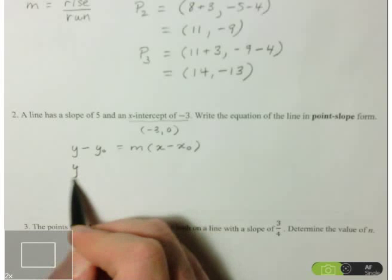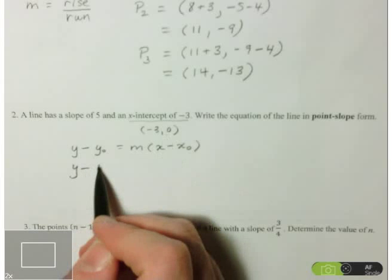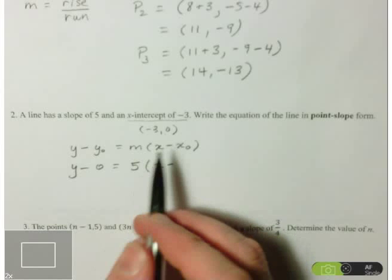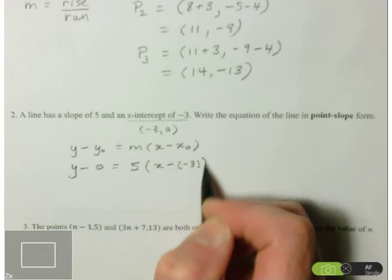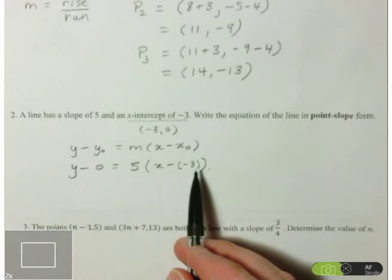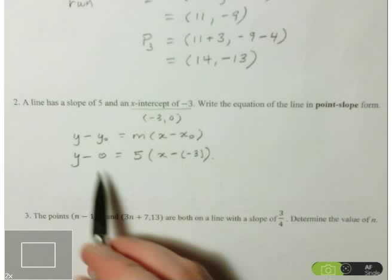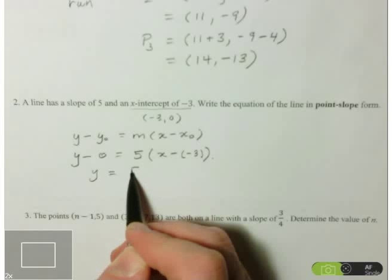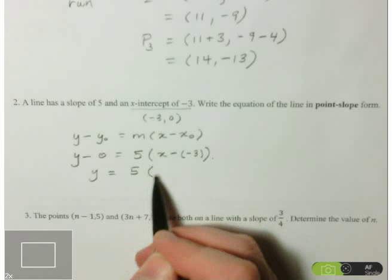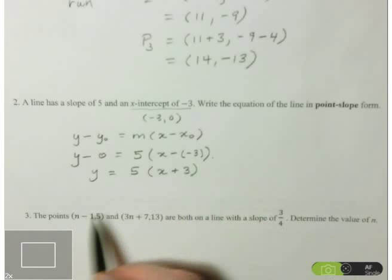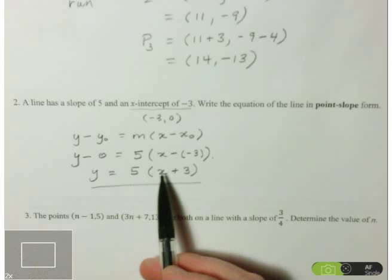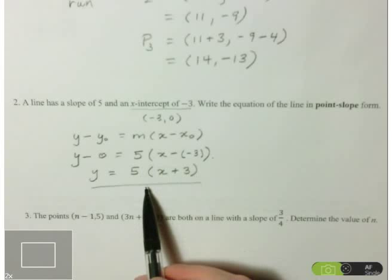Let's input our numbers: y minus 0 equals 5 times (x minus negative 3). We do some simplification — writing y minus 0 isn't helpful, so we just write y. And we simplify subtracting a negative to get x plus 3. So the equation in point-slope form is y = 5(x + 3). No need to distribute unless asked for slope-intercept form or to find the y-intercept.